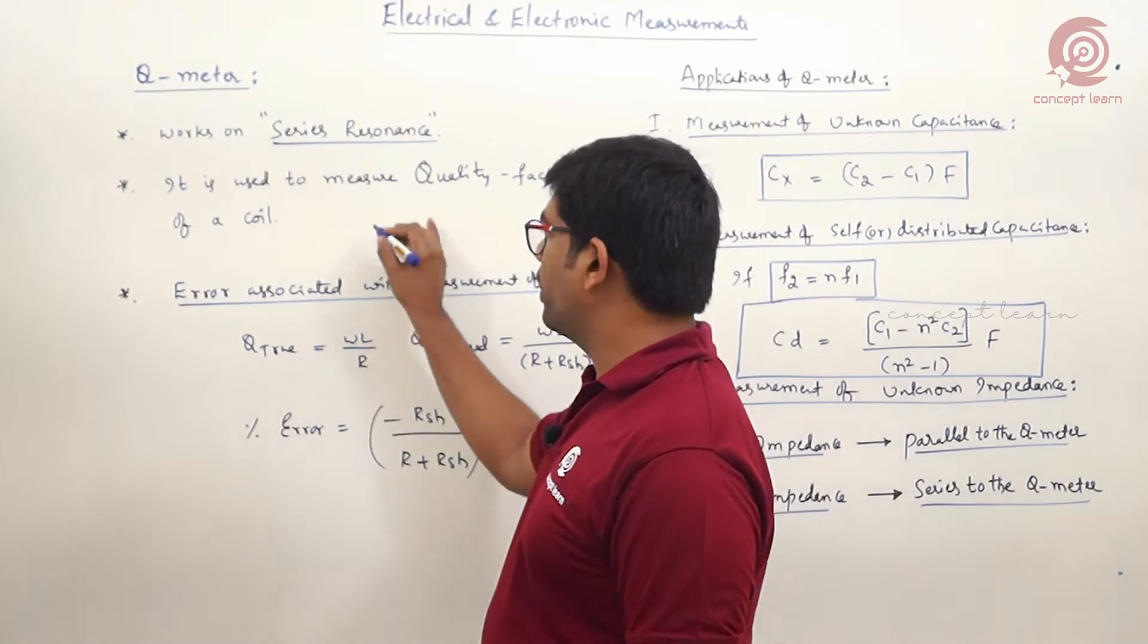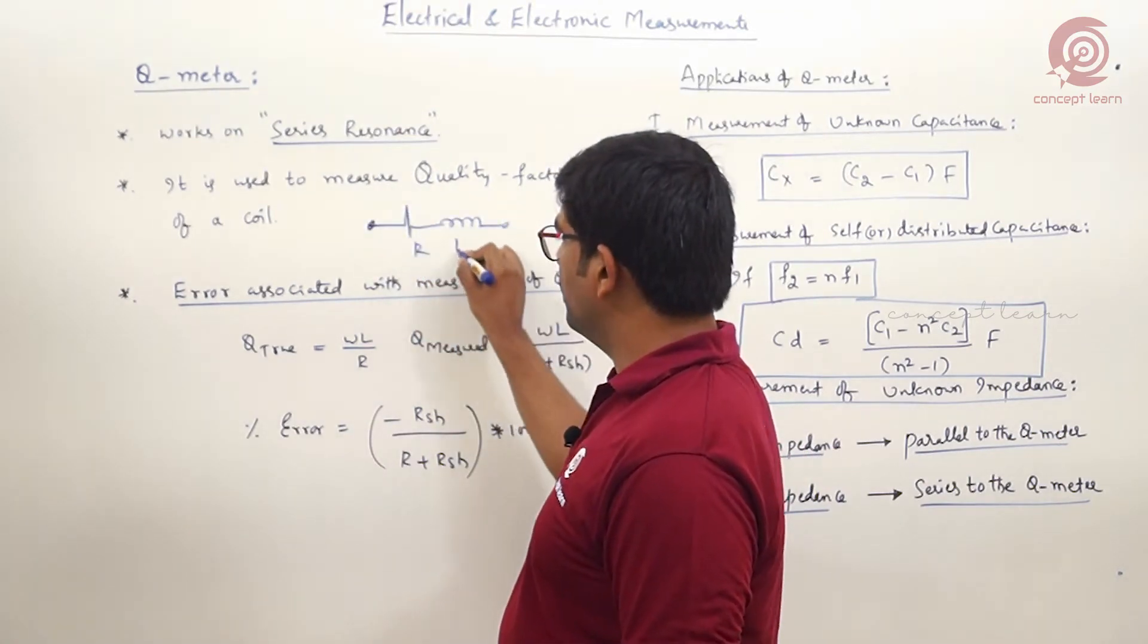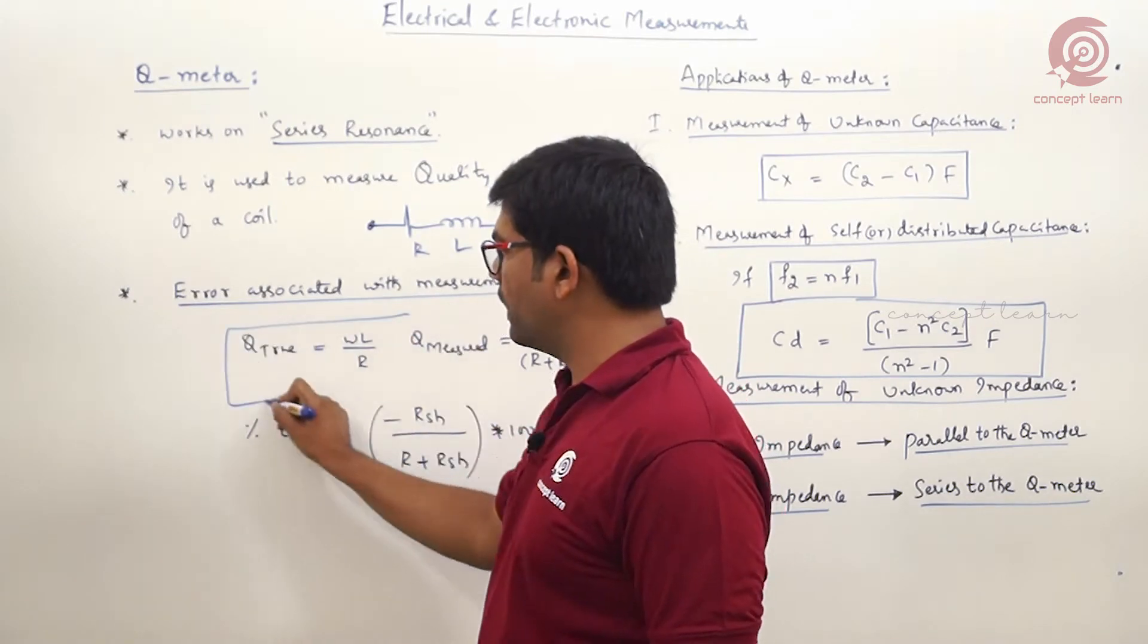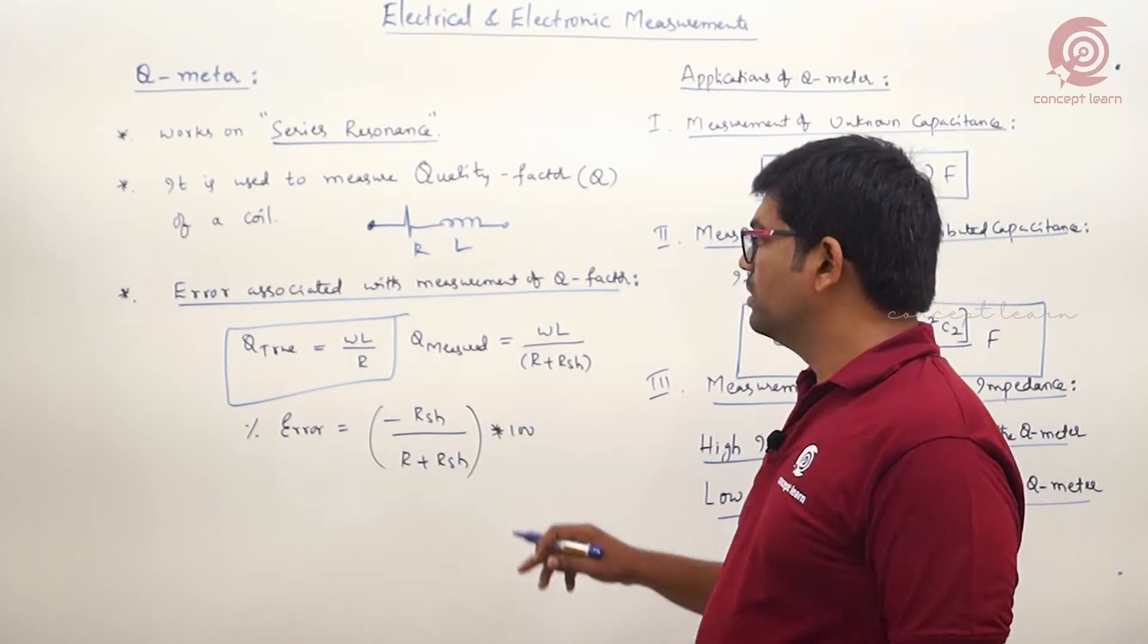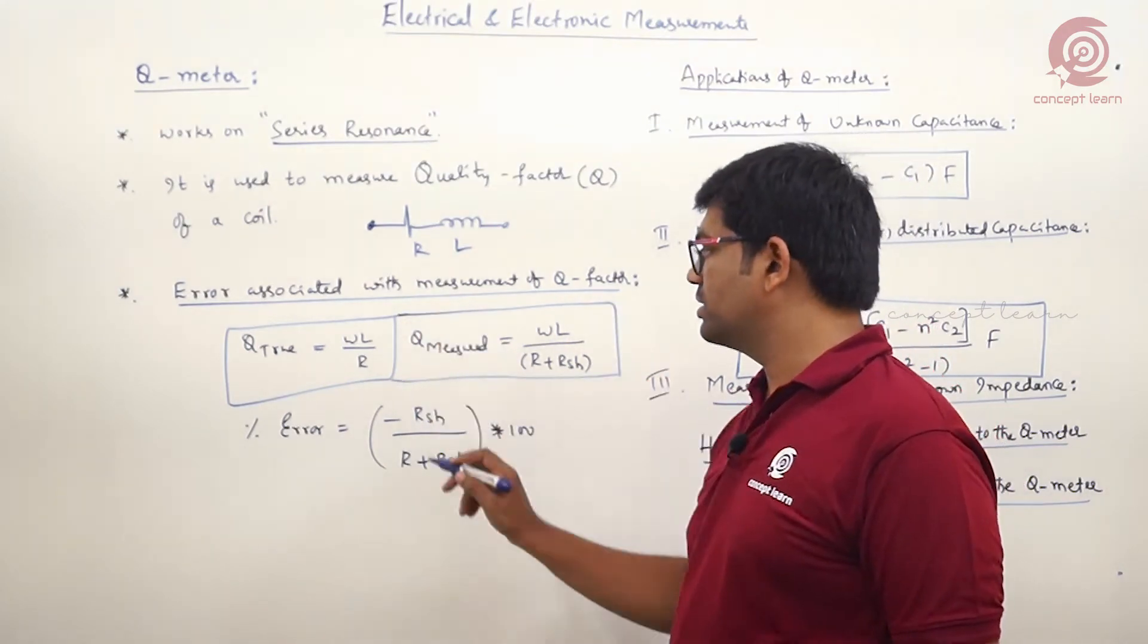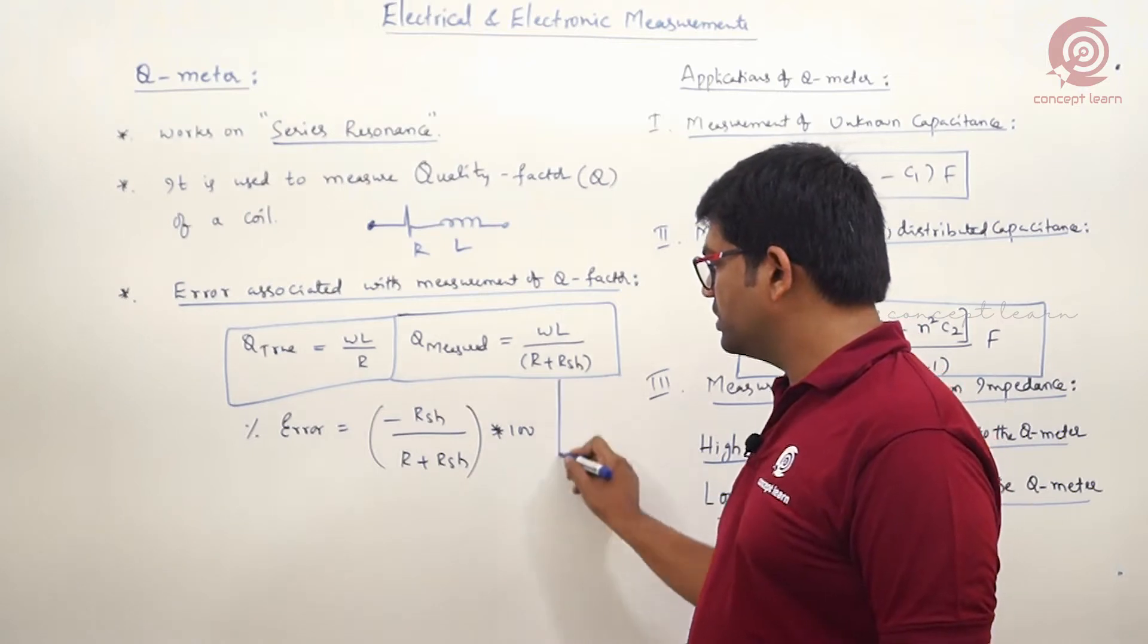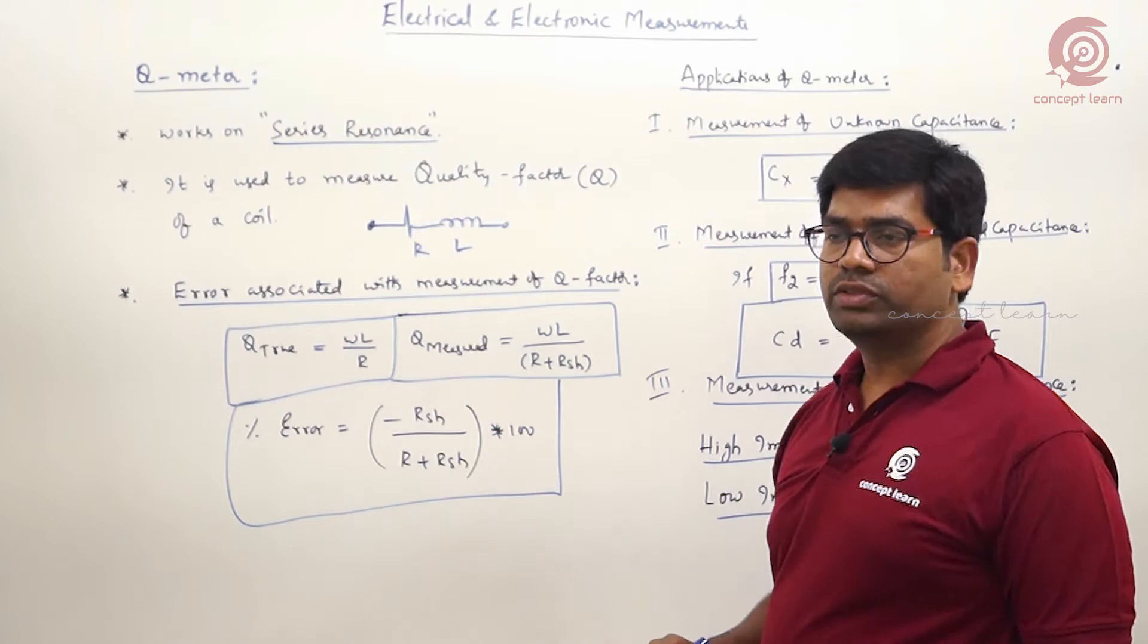In general, if you consider a coil, it means R and L. The true value of quality factor is ωL/R. But with this practical Q meter, shunt resistance is coming. Because of that, the error is (measured value minus true value)/true × 100. This will be the error expression we get for quality factor meter.